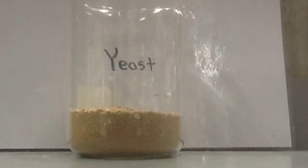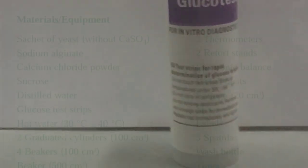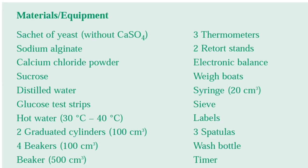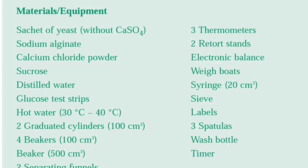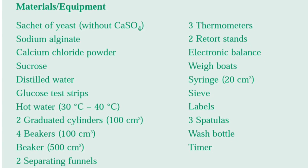Some important ingredients to have are yeast, calcium chloride, sodium alginate, sucrose and the glucose color strips. Here are some other very important materials needed for this experiment.